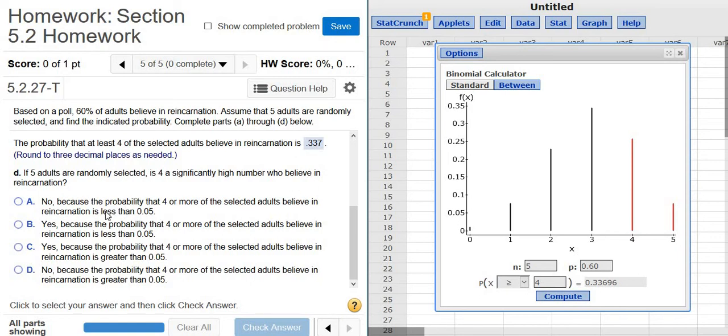So I would say no, because this number is not greater than 0.05. So it would be no, it's this one here. No, because the probability that 4 or more of the adults believe is greater than 0.05. So it would be the last one here.